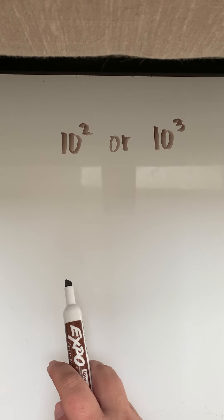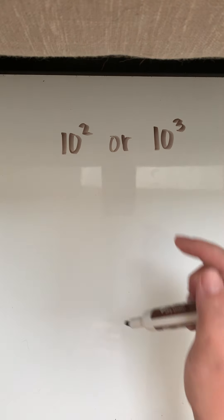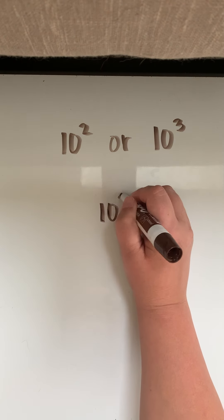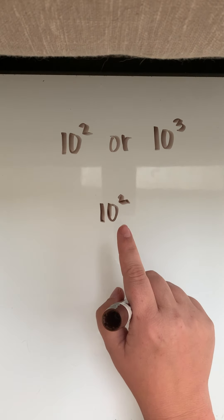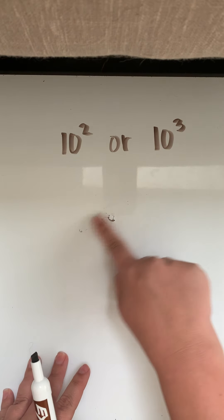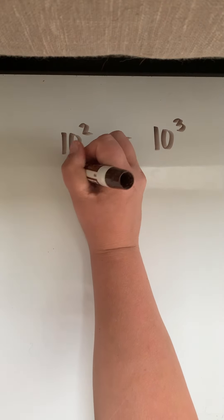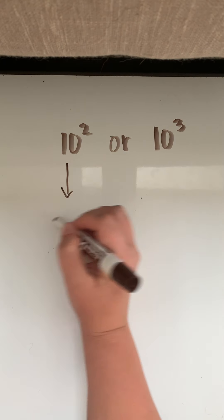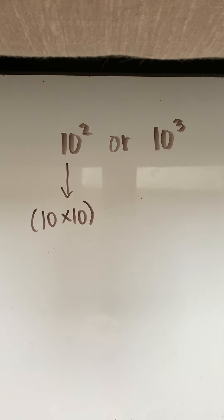Now we have already learned about these exponents. Remember that's what those are called and what that actually means. Don't forget — 10 to the second power does not mean 10 times 2. Be very careful of that. Remember what it actually means. If I were to rewrite this, it would simply be 10 times 10.